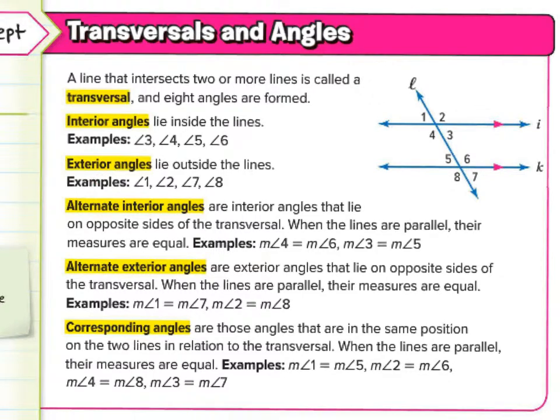Exterior angles lie outside the parallel lines — angles one, two, seven, and eight. Those are your exterior angles.